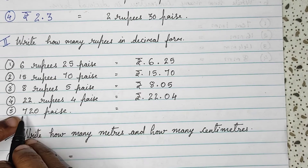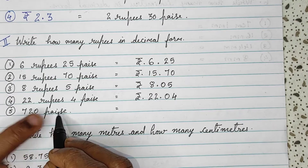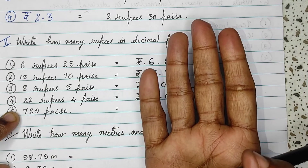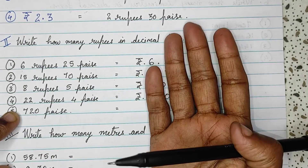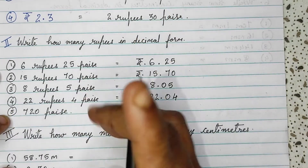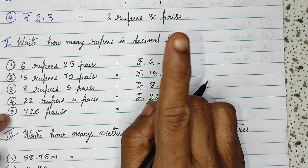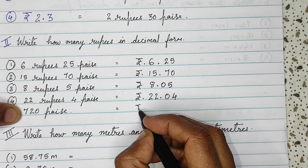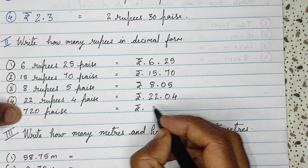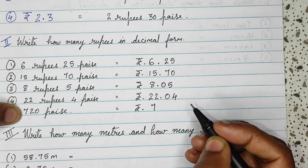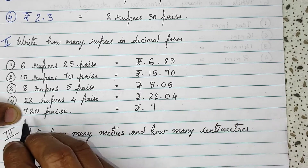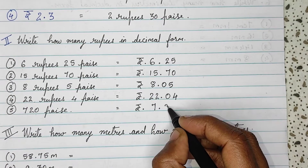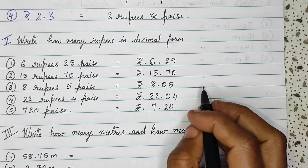Here, 720 paise. 100 paise equals 1 rupee. So, 700 paise equals 7 rupees. That means 7 rupees and the remaining 20 paise. Done.